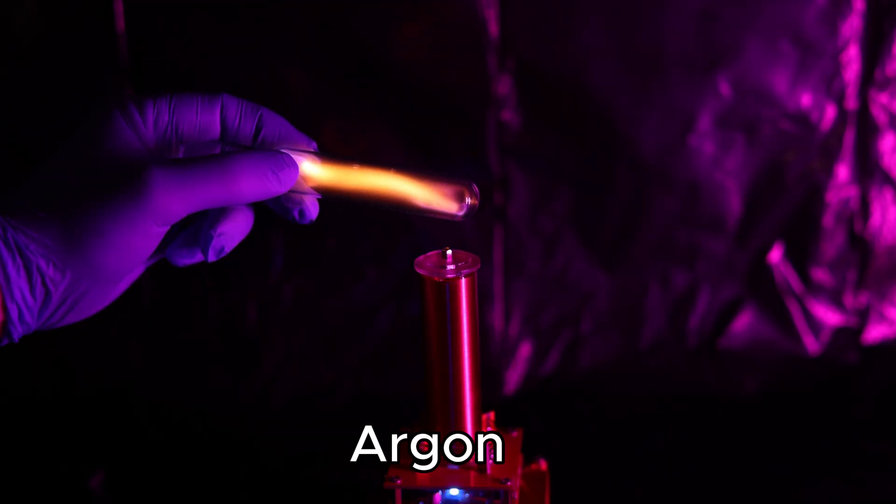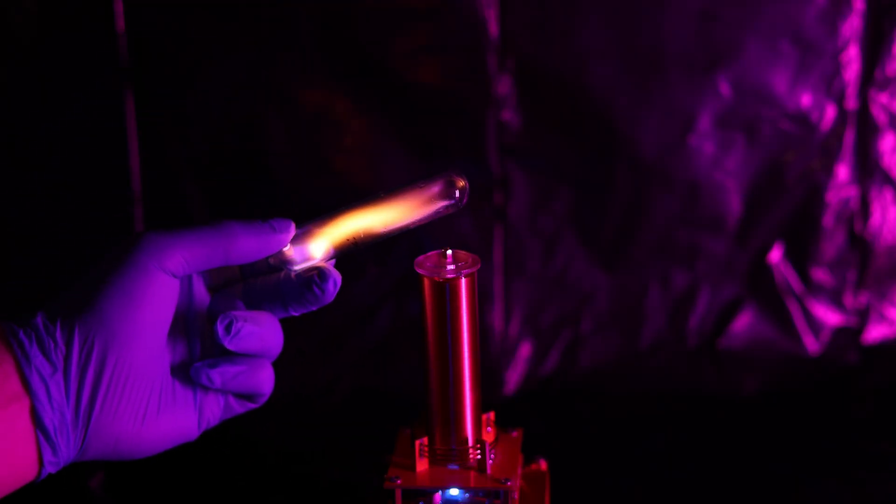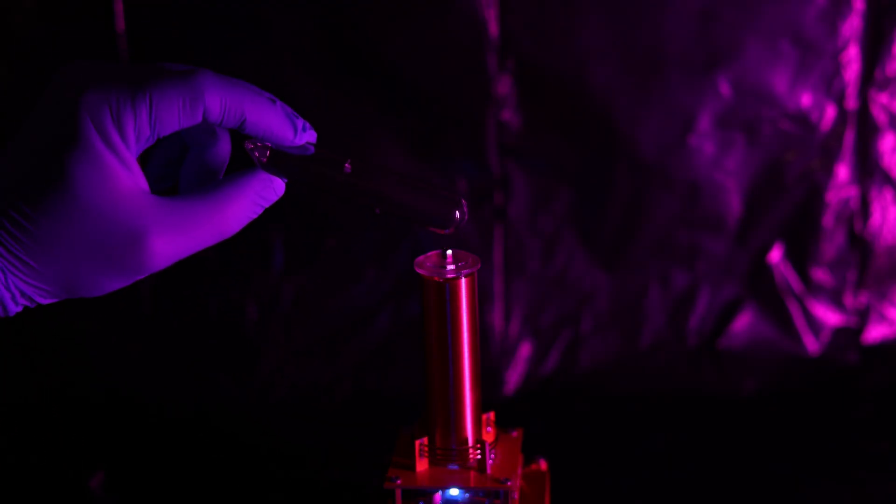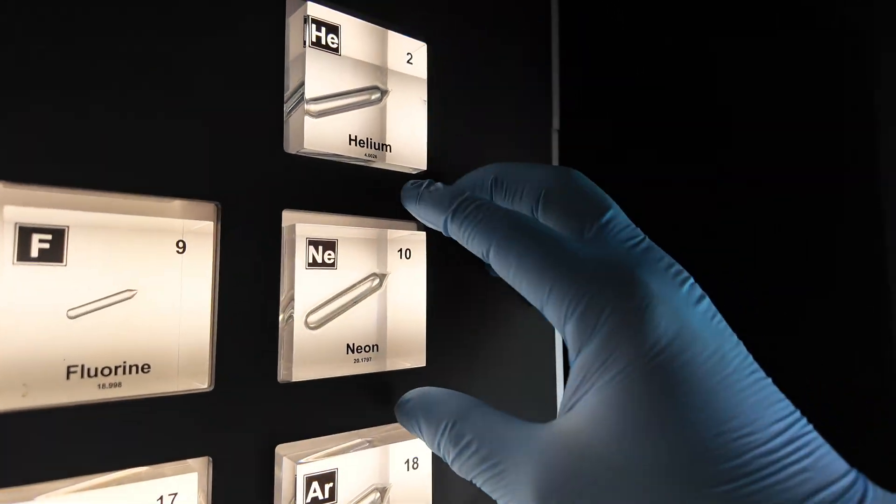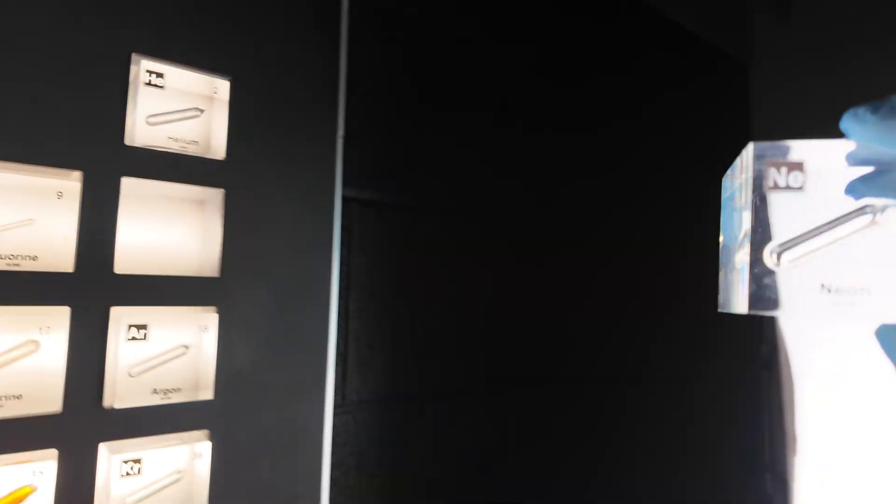This is why they glow next to the Tesla coil, and it's also why each element has a unique glow to it, because each element has a very specific amount of energy required to get to that higher energy state in the first place.